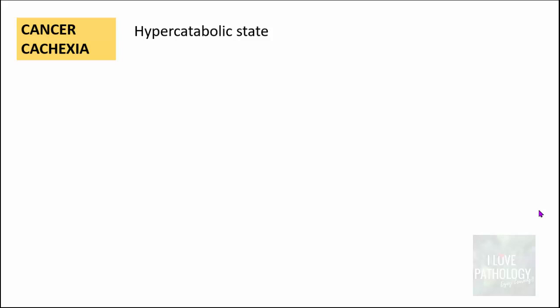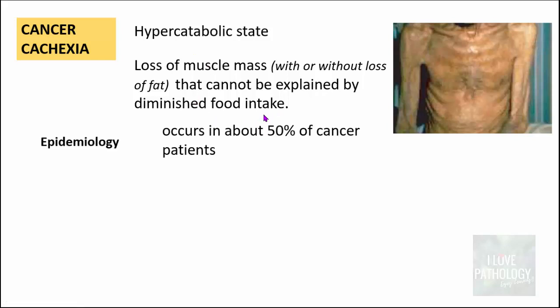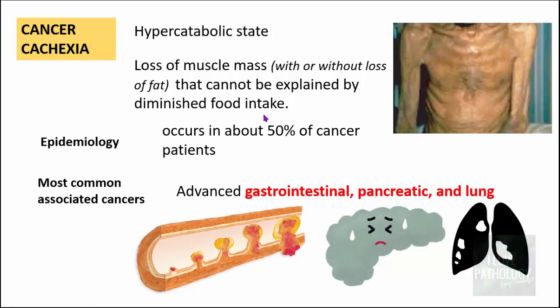Moving on to cancer cachexia — it is a hypercatabolic state, meaning there is increased metabolism of normal body constituents, resulting in loss of muscle mass. This loss of muscle mass can be with or without loss of fat, and it cannot be explained by diminished food intake. It occurs in around 50% of cancer patients, most commonly in advanced gastrointestinal tract cancers, advanced pancreatic cancers, and advanced lung cancers.